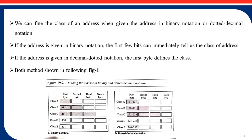We can find the class of an address when given in binary notation or dotted decimal notation. If the address is given in binary notation, as shown in figure 1A, the first few bits can immediately tell us the class of the address. In figure 1B, which shows the dotted decimal notation, the first byte defines the class, as shown by the shaded region. These are the two methods by which we can represent IP addresses.